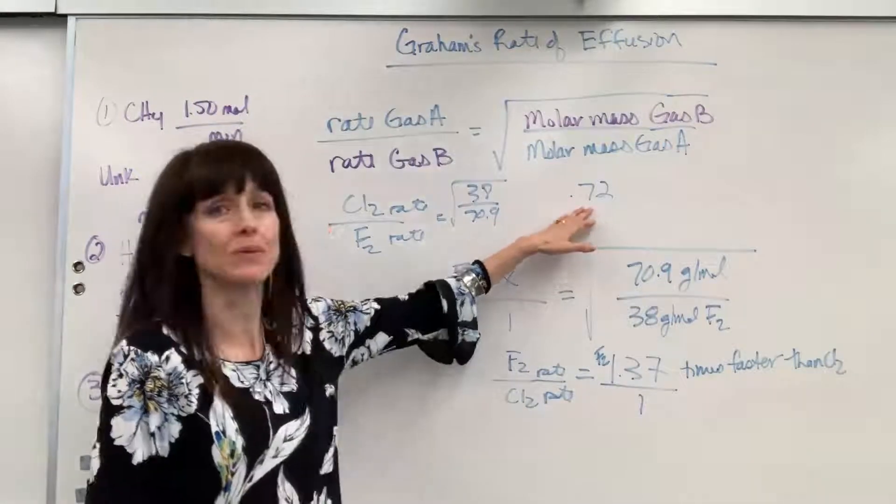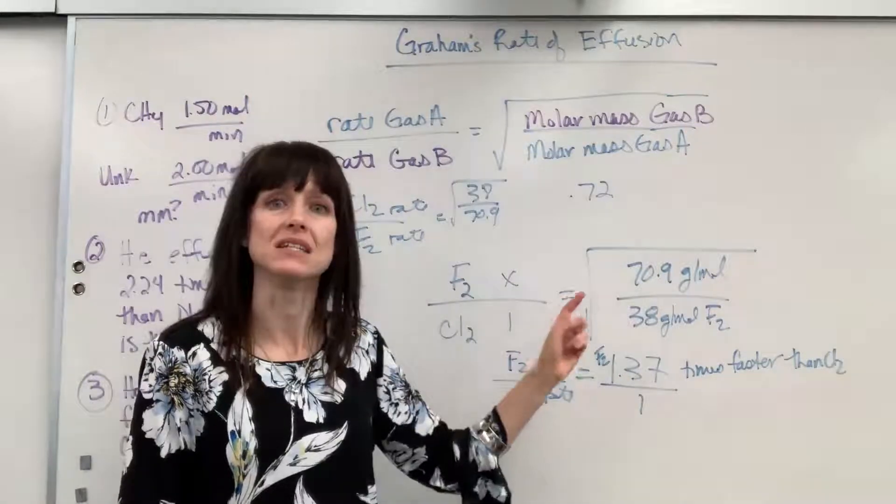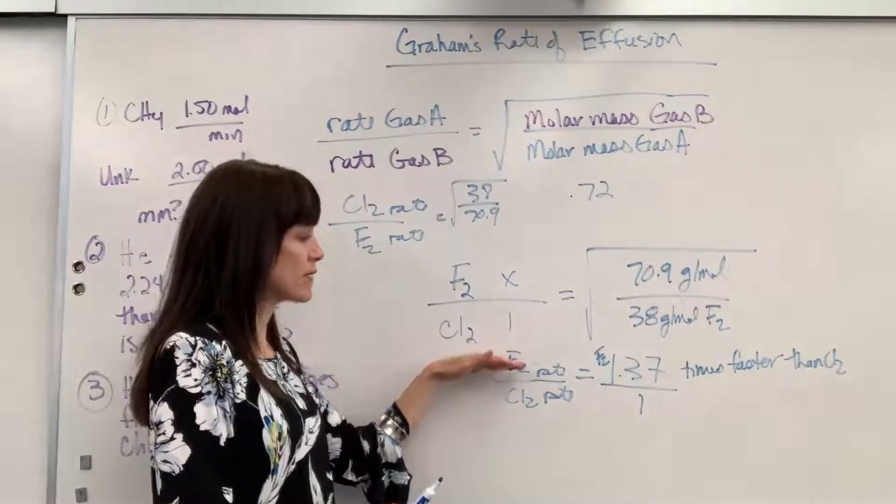If it's greater than 1, it means that that numerator, that gas, is faster. Let me say that one more time. If the rate of the gas in the numerator, if that's greater than 1, it means it's faster.